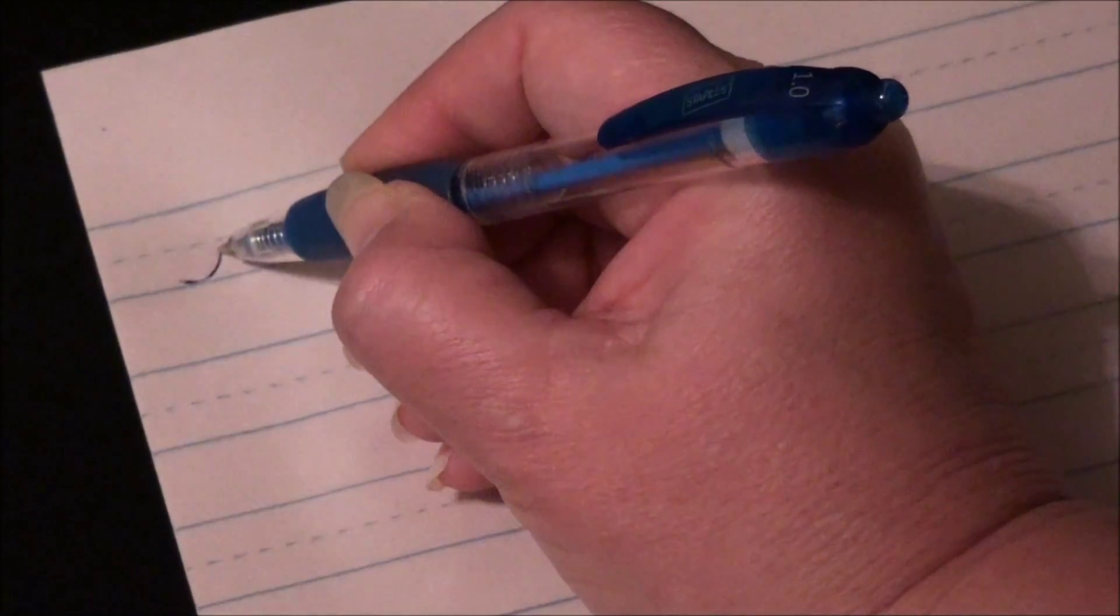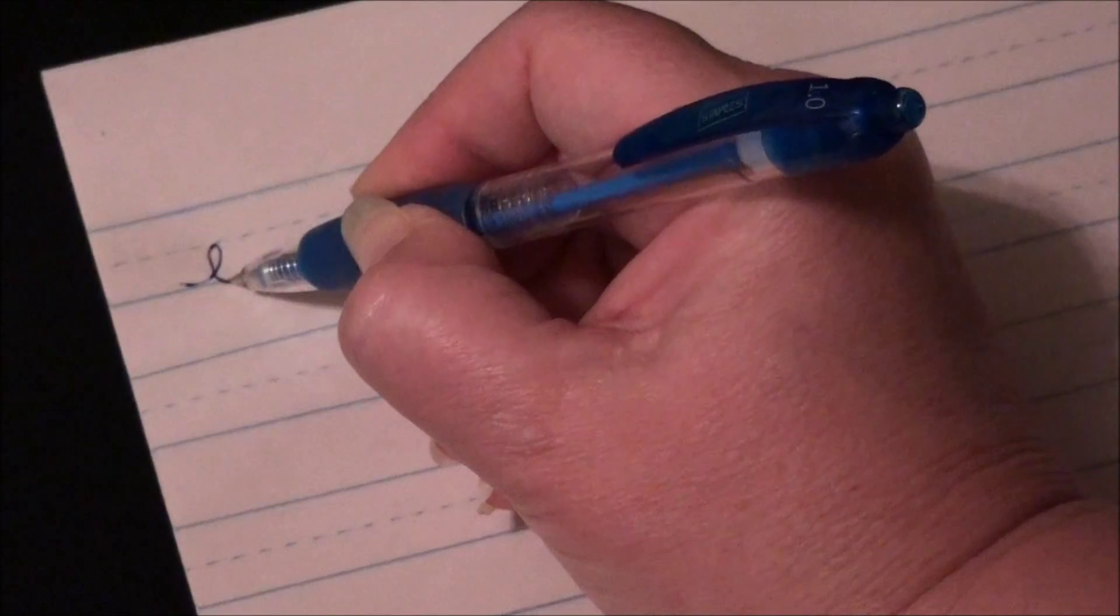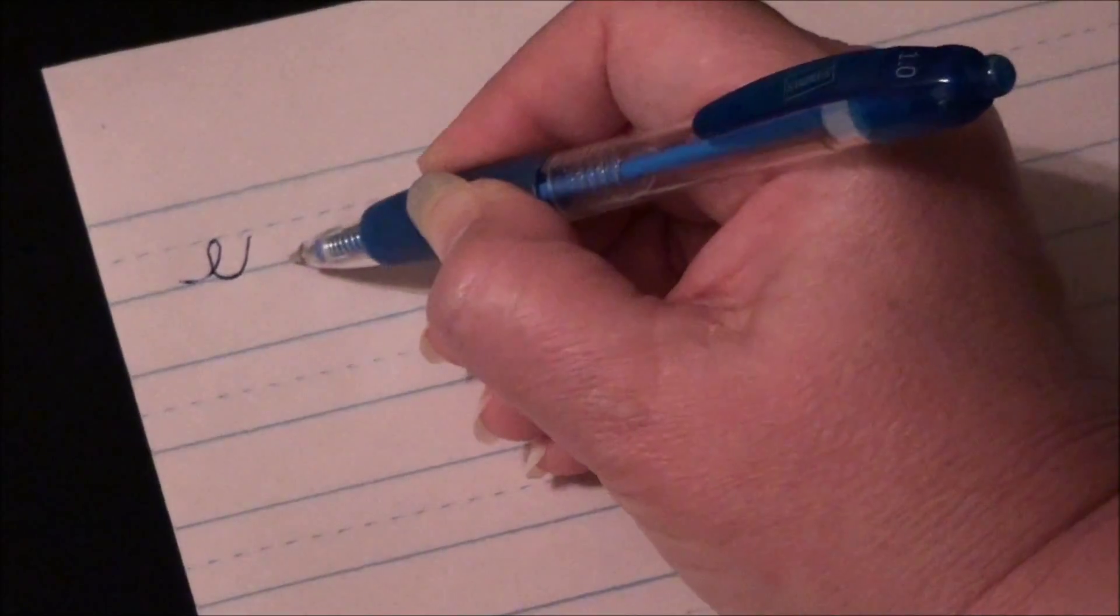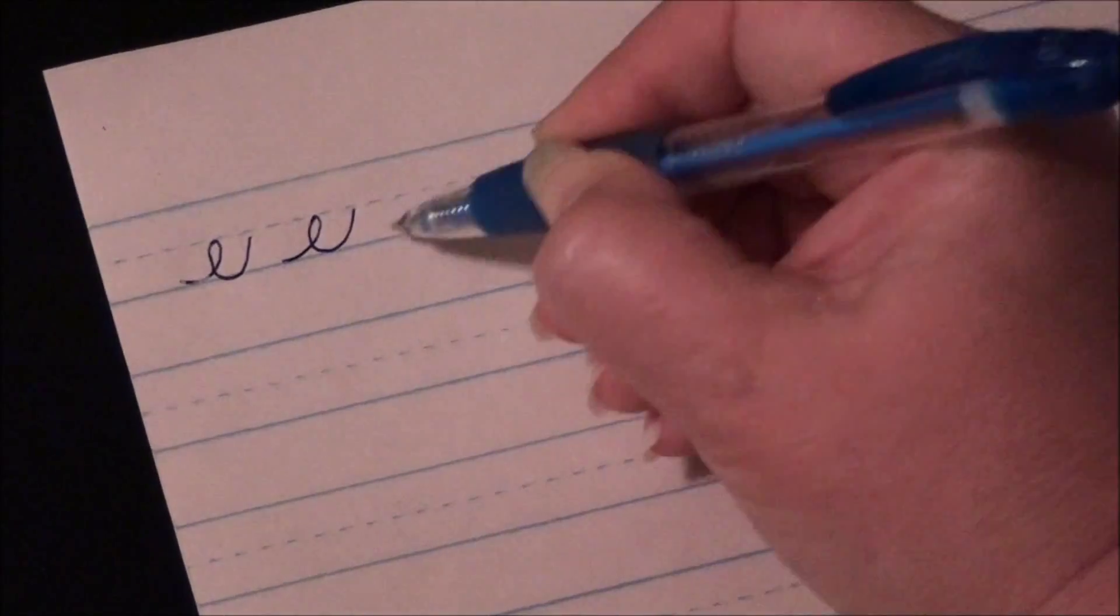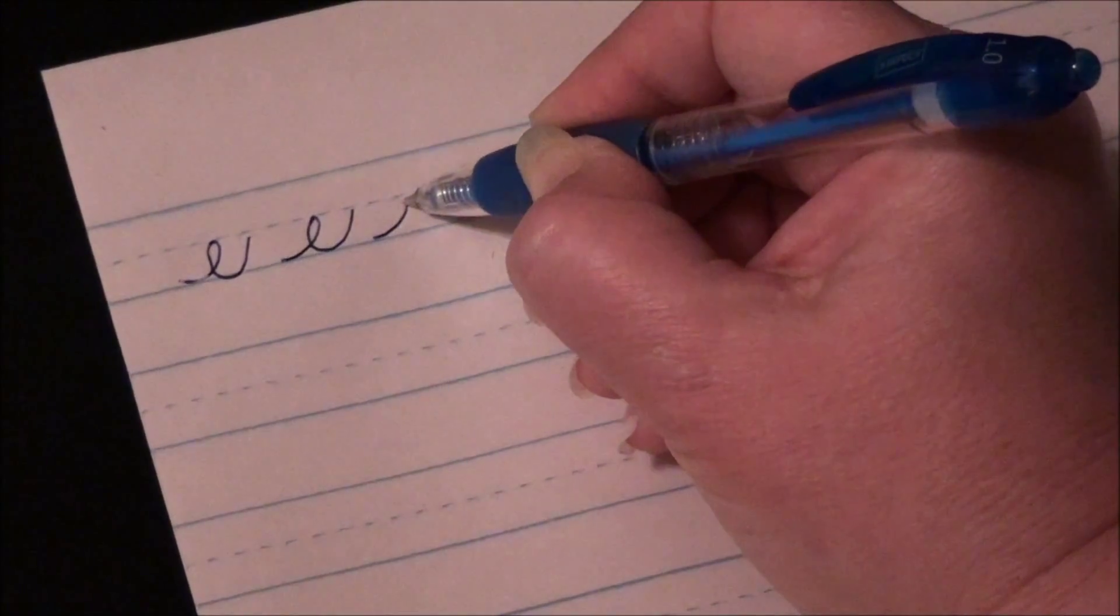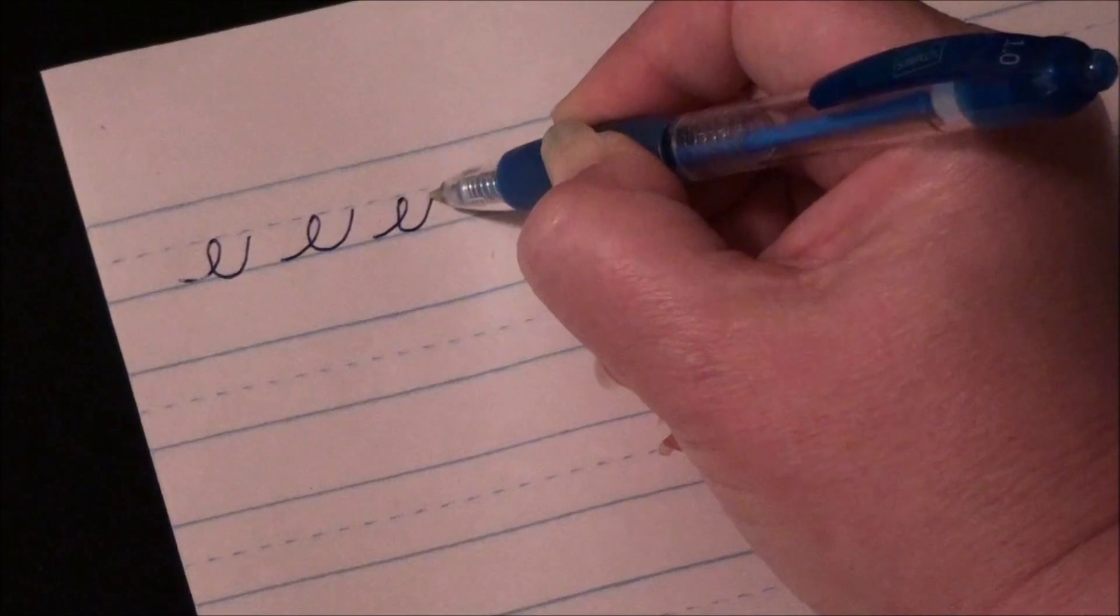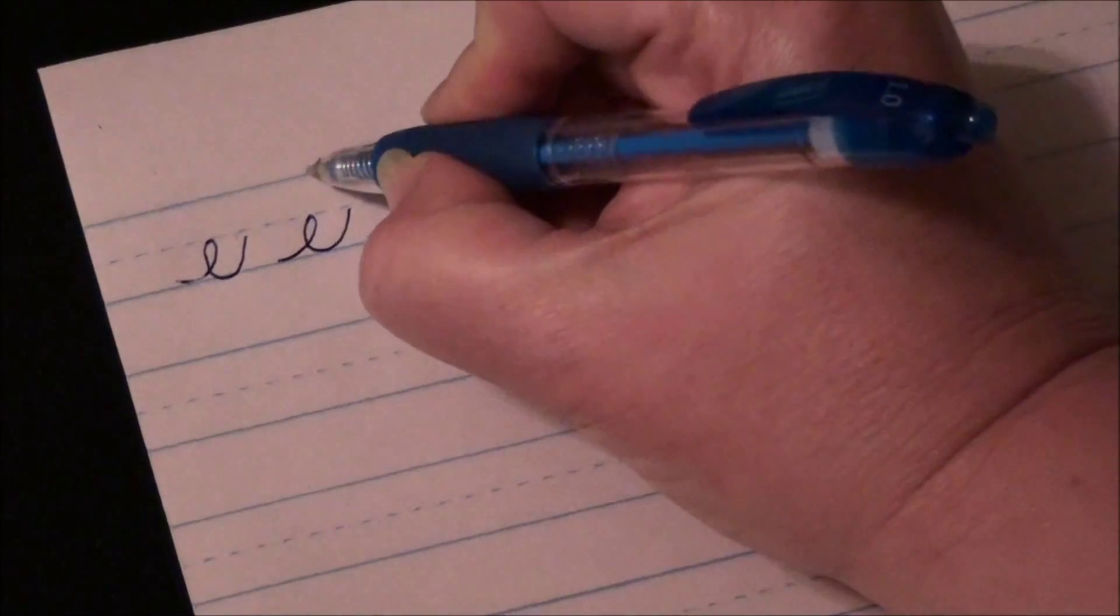Start at your baseline, loop to your midline, come down and touch, and back up to your midline and do another one. Remember, you want them to lean a little bit. Having a little trouble leaning mine because of the angle I'm writing from because of the camera, but there you go. I think I like this one the best. I'll give him a smiley face.